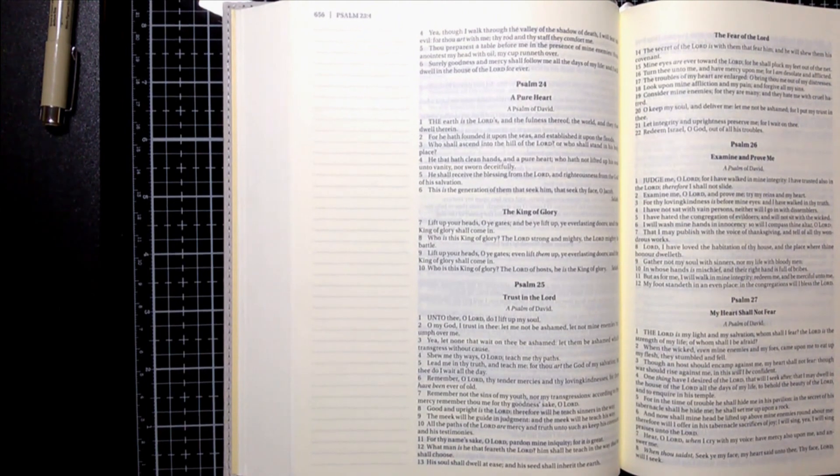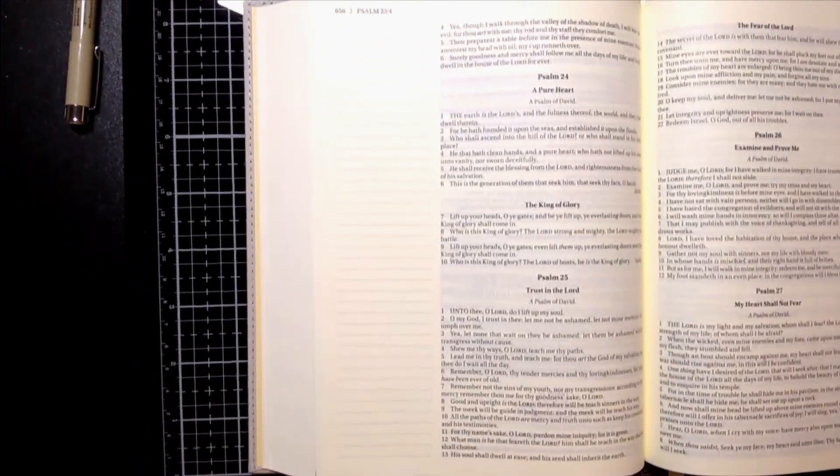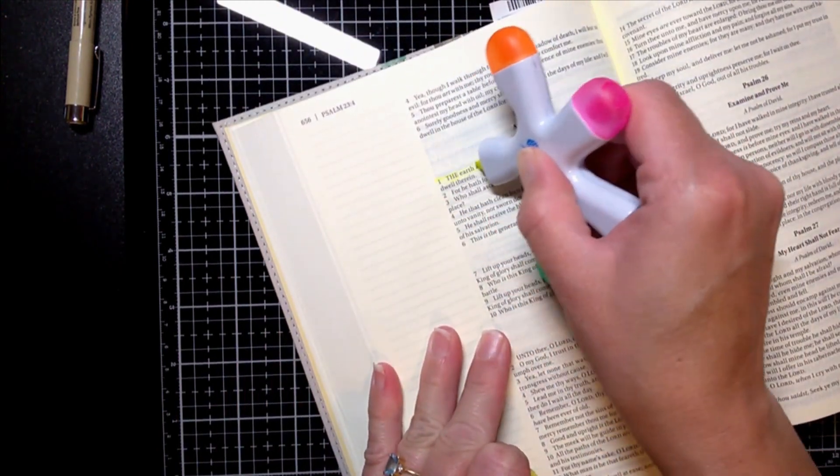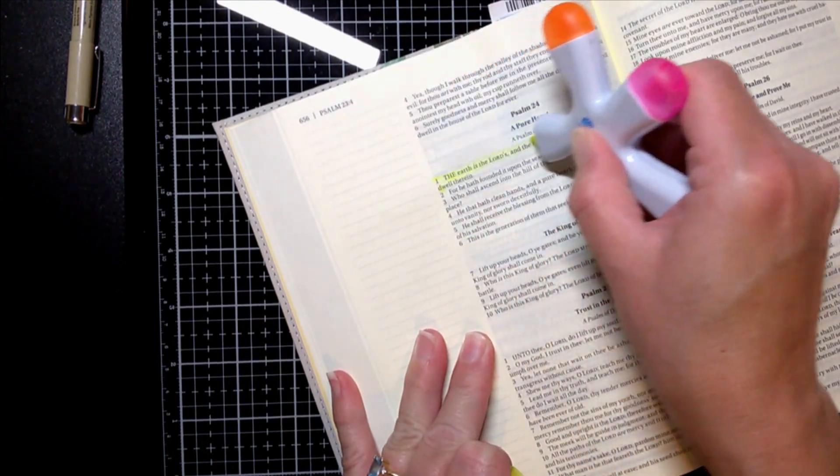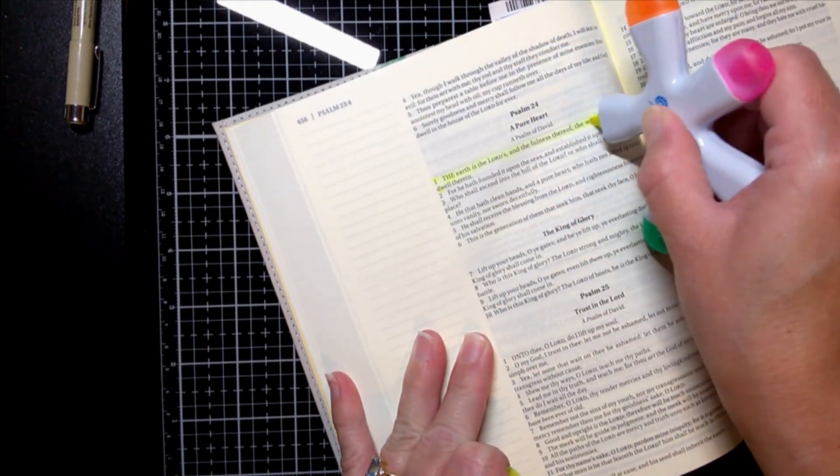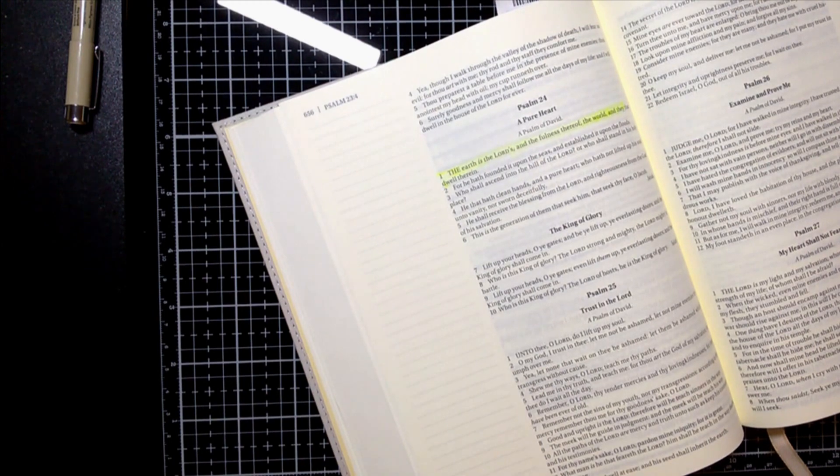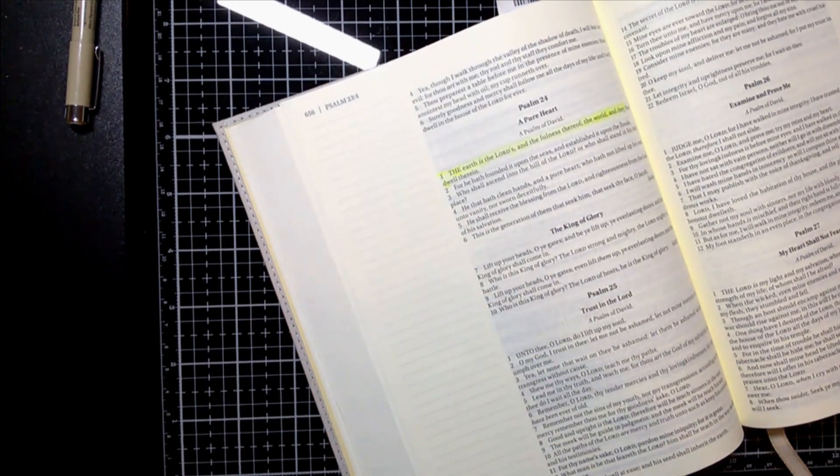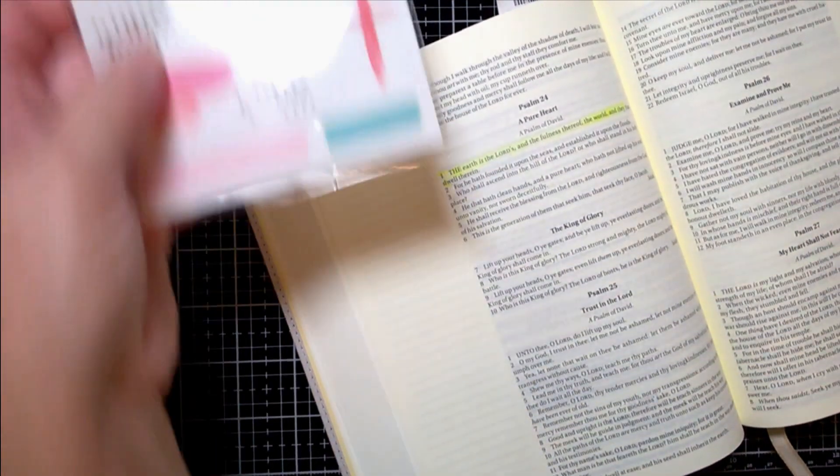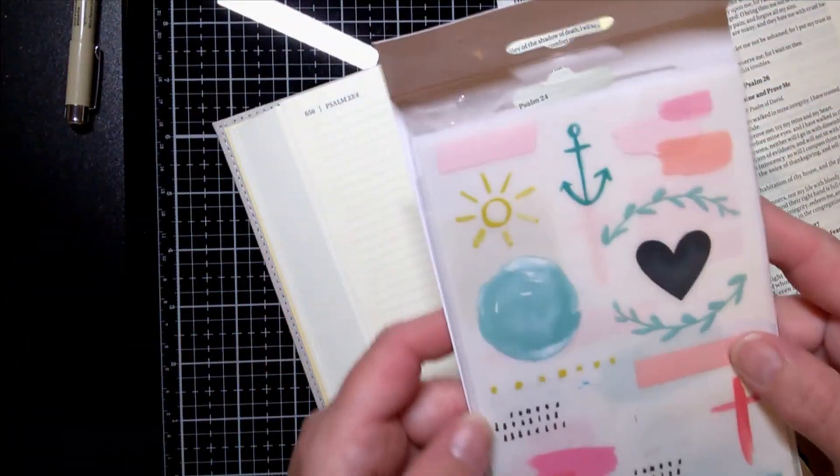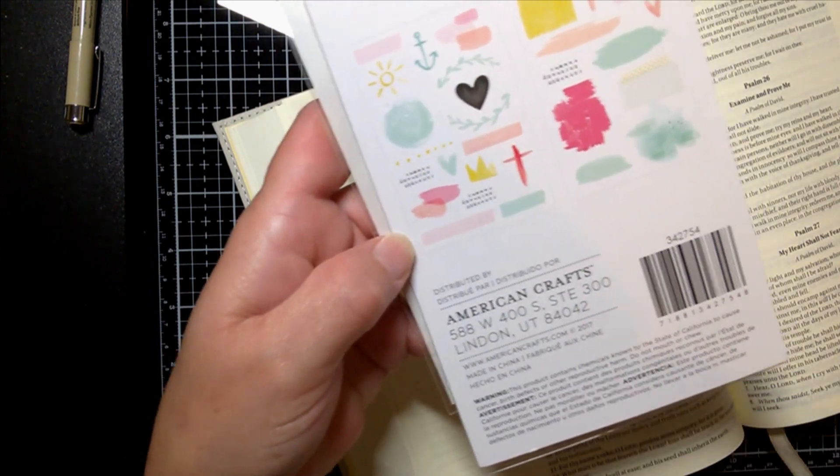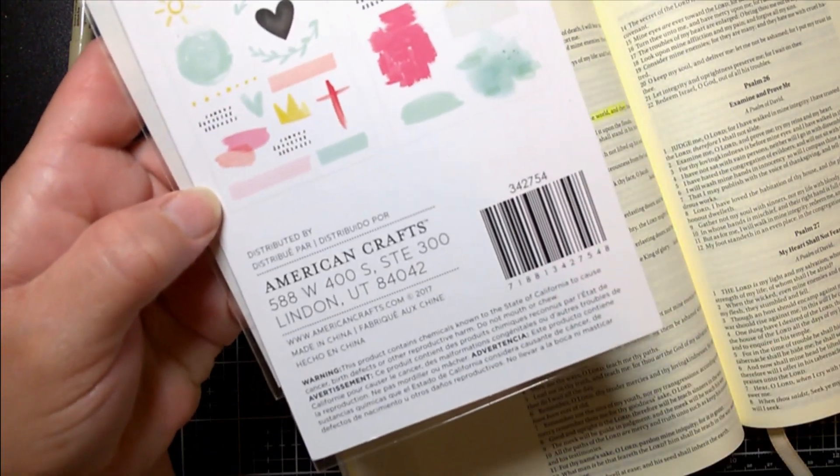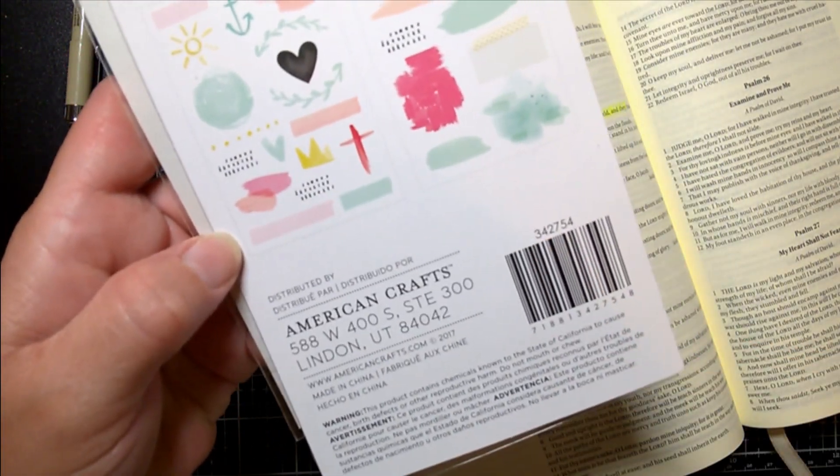So what I'm going to do is highlight that verse first with my highlighter here, and I'm going to use some rub-ons. These are from Creative Devotionals by American Crafts. This is the UPC and the number that you might need to order them. I purchased mine from HSN.